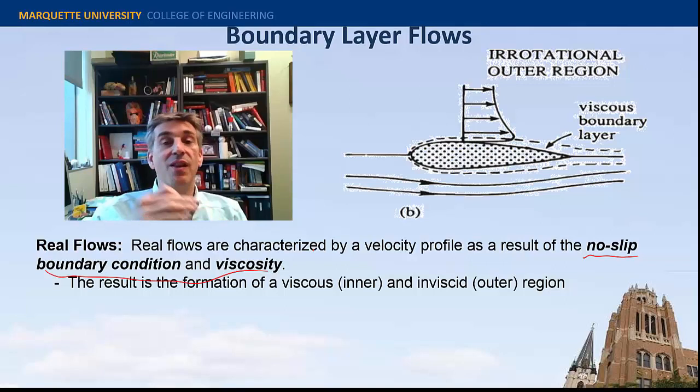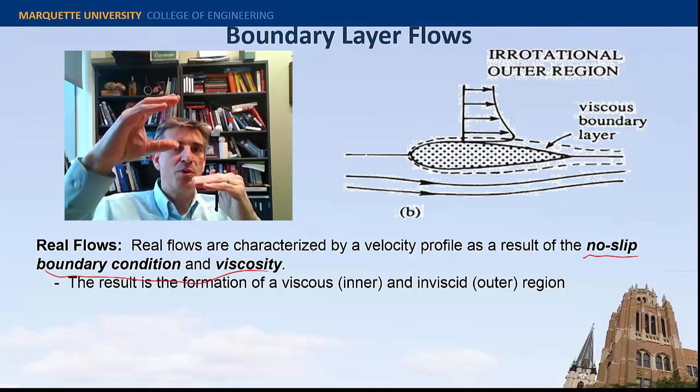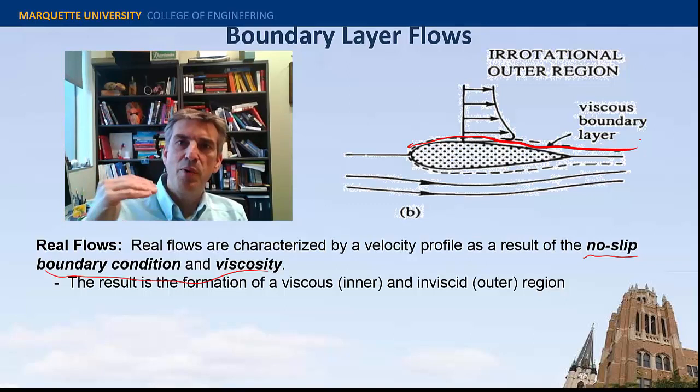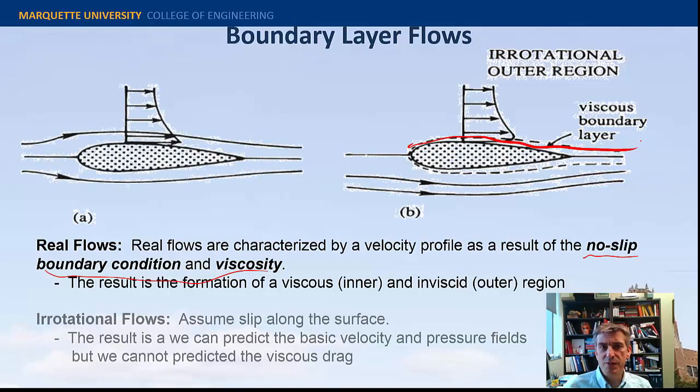The fluid moving at some velocity far away from the surface creates the situation where the flow slows down and eventually comes to zero on the surface, creating the velocity profile. This profile grows and changes, and the demarcation between the inviscid region above and the viscous region below is called the boundary layer — shown here as a dotted line separating the inner and outer regions.